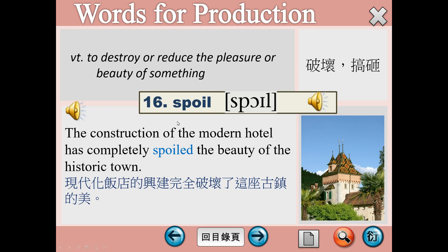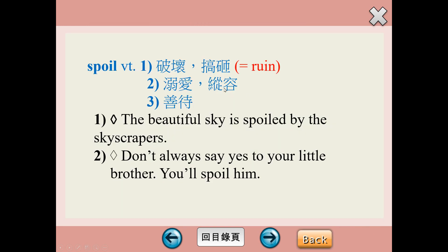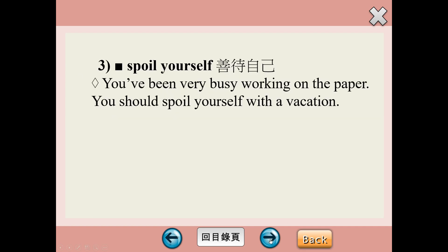Number 16，spoil，破壞或搞砸。The construction of the modern hotel has completely spoiled the beauty of the historic town. Historic就是歷史性的。Spoil這個字除了破壞之外，其實還有溺愛啊、縱容啊，好也可以是spoil。那spoil如果加反身代名詞oneself的時候，就是spoil yourself，就是寵愛你自己。另外我們常常看電影最不喜歡別人爆雷或者是劇透，那個爆雷劇透那個動詞也可以用spoil，那这里spoil yourself指的就是善待你自己。